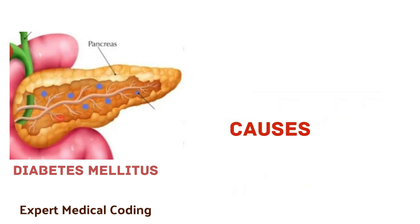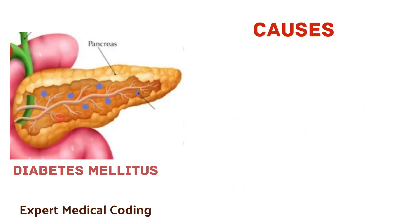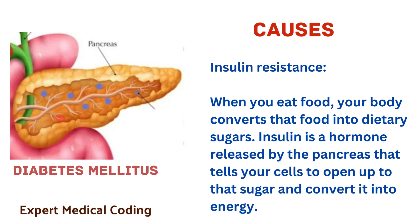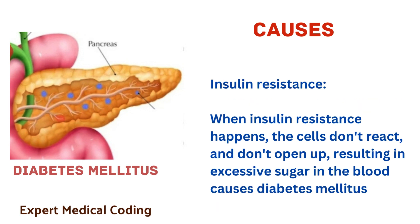Frequent skin and/or vaginal yeast infections. Now, let us see the causes. The first cause for diabetes mellitus is insulin resistance. When you eat food, your body converts that food into dietary sugars. Insulin is a hormone released by the pancreas that tells your cells to open up to that sugar and convert it into energy. When insulin resistance happens, the cells don't react and don't open up, resulting in excessive sugar in the blood, causing diabetes mellitus.